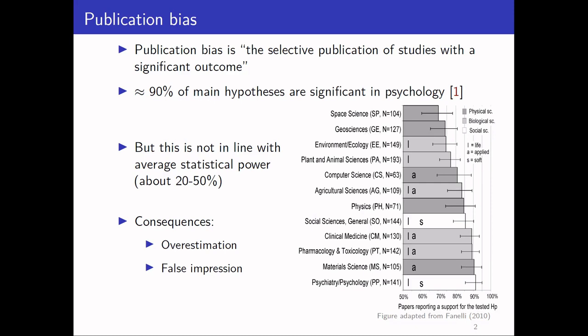What the methods PUNIFORM and PUNIFORM star do is they are able to correct for publication bias. Publication bias is the selective publication of studies with a statistically significant outcome. In its most extreme case, this means that studies with a statistically significant effect size get published, and studies with a statistically non-significant effect size do not get published.